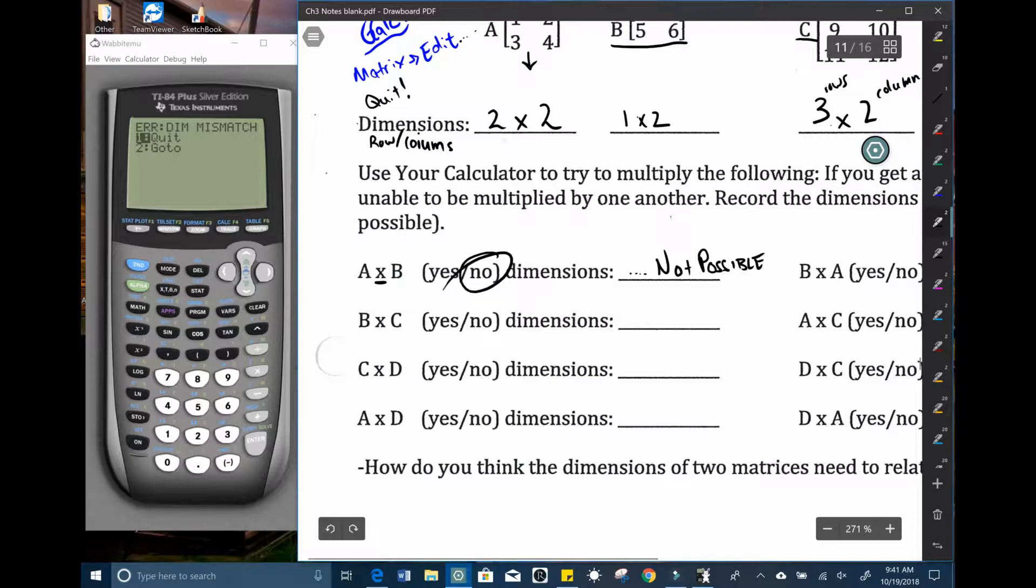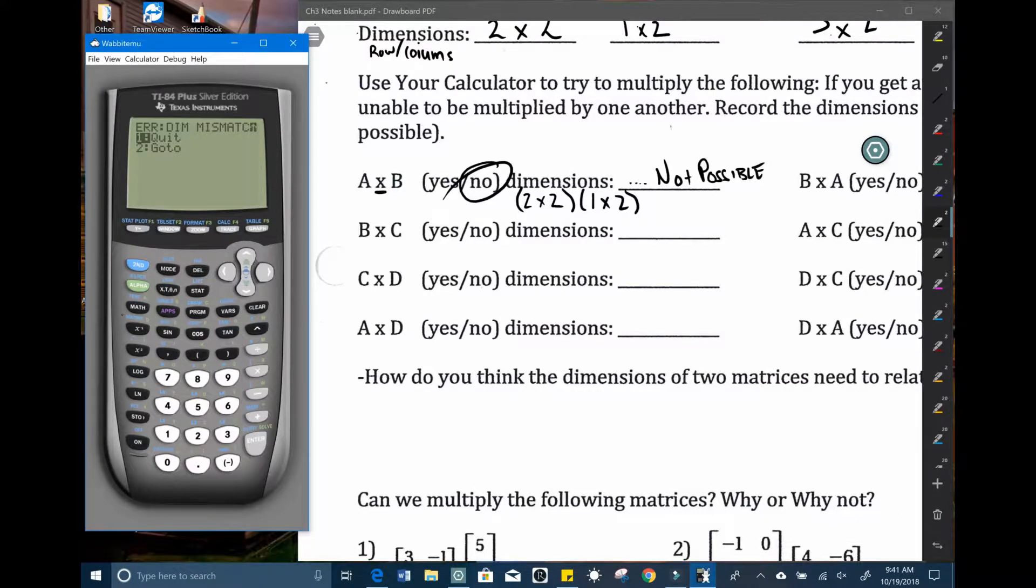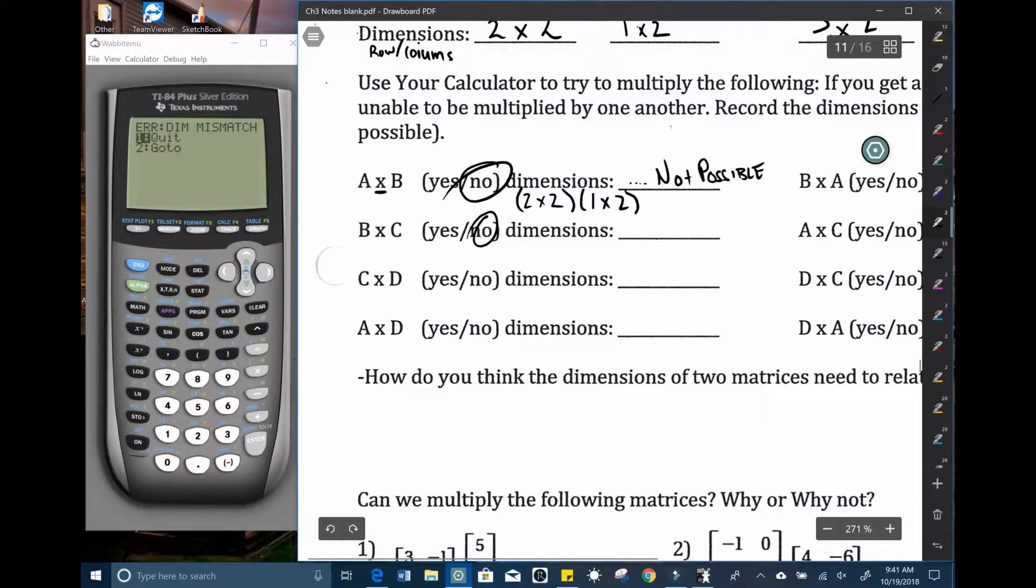The dimensions, if we have to write out the dimensions of A, that was a two by two. And we tried multiplying it by a one by two. So there's different things to look at. Let's try B times C. So second matrix, hit one, get out of there. Second matrix B times second matrix C. Hmm. That one doesn't work either. So not possible. And if we write down the dimensions B was a one by two and C was a three by two. I promise some of these will work.